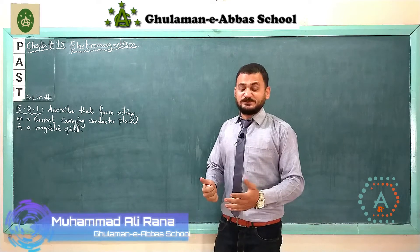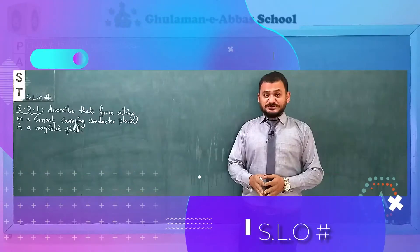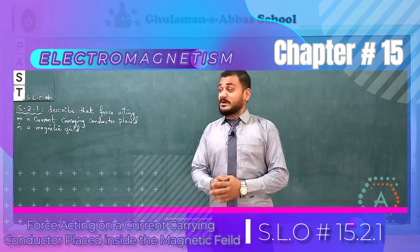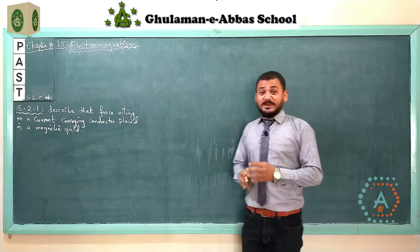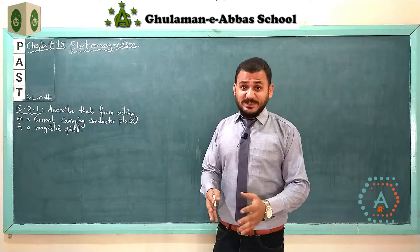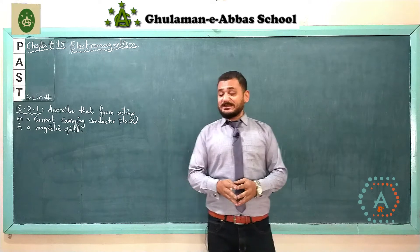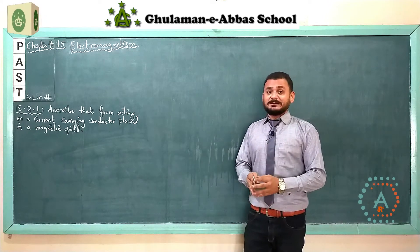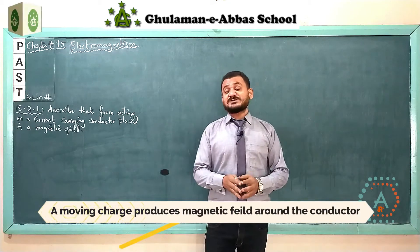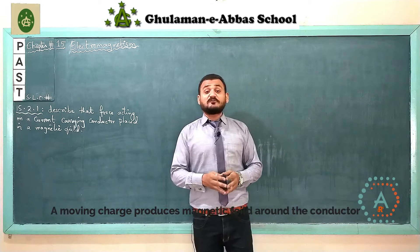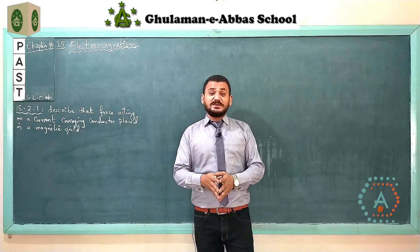Bismillahirrahmanirrahim, Assalamualaikum. This is Muhammad Ali Rana from Ghulam Abbas School. Today in this video lecture we have another SLO from chapter number 15, Electromagnetism. In the last lecture we learned that when a conductor has current flowing through it, or charges moving, there is a presence of a magnetic field around that conductor.